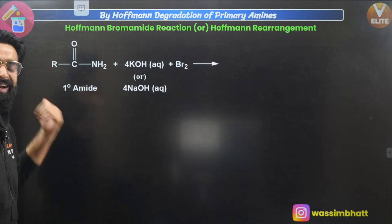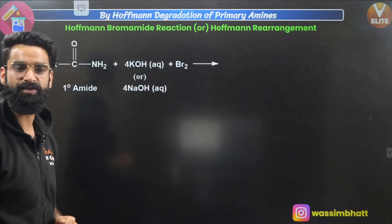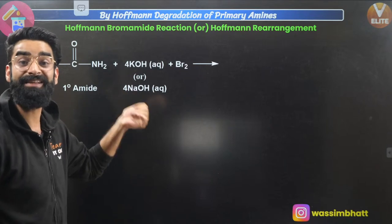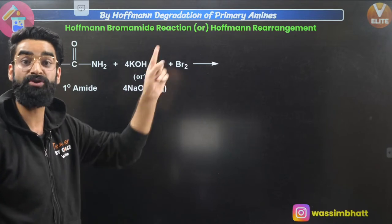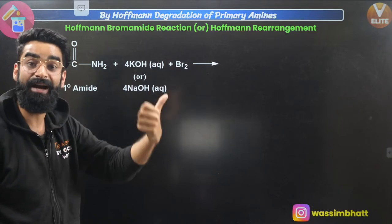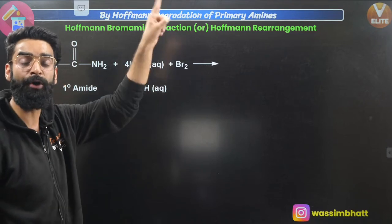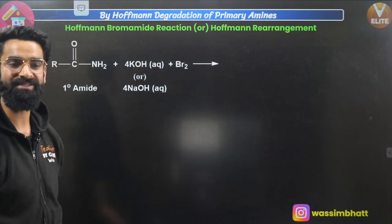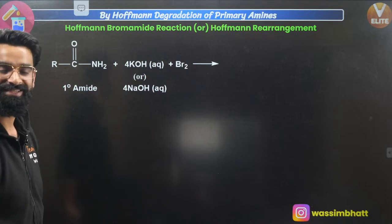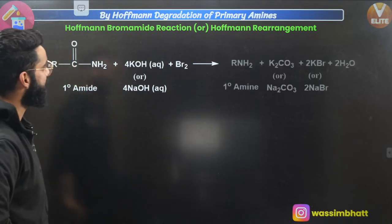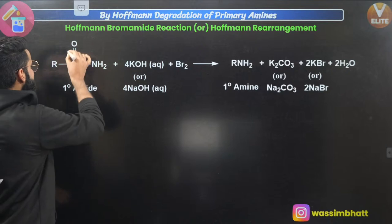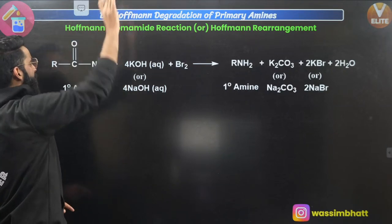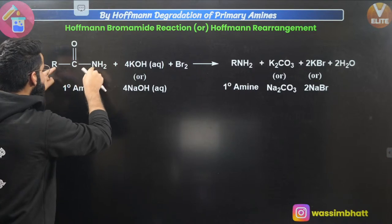Let's work through some examples of Hoffmann rearrangement. In the reaction, you use KOH or NaOH plus Br2 (or KOBr/NaOBr). Take the C=O out and join the remaining carbon chain directly to nitrogen with NH2. For example, CH3CH2CO–NH2 with KOH/Br2 gives CH3CH2NH2 (one carbon less than the original three-carbon amide). For benzamide (C6H5CO–NH2) with KOH/Br2, take the CO out and attach NH2 directly to the ring, giving aniline (C6H5NH2).